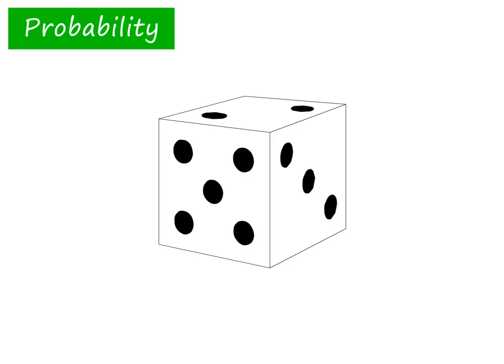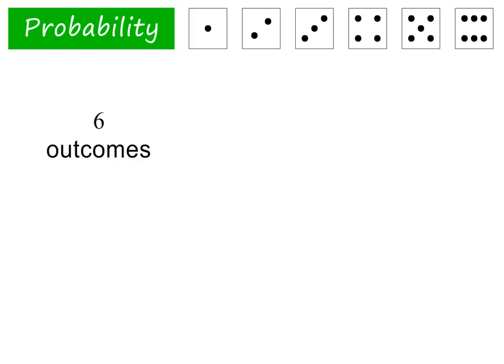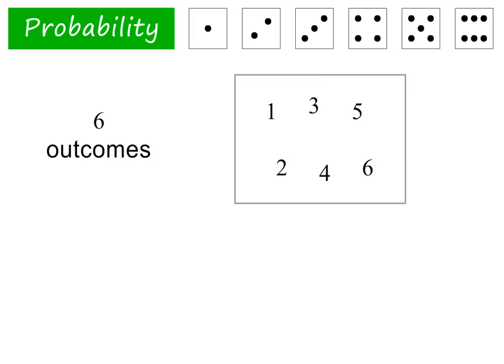Let's begin with the experiment of rolling a die. There are six possible outcomes in this experiment. In other words, you can get a number from 1 to 6 when rolling a die. We call all possible outcomes in an experiment the sample space, or S for short. We write N(S) equals 6 to indicate that there are six possible outcomes in the sample space.